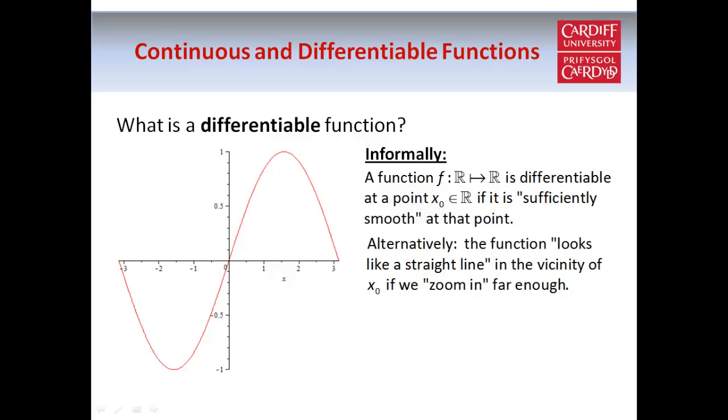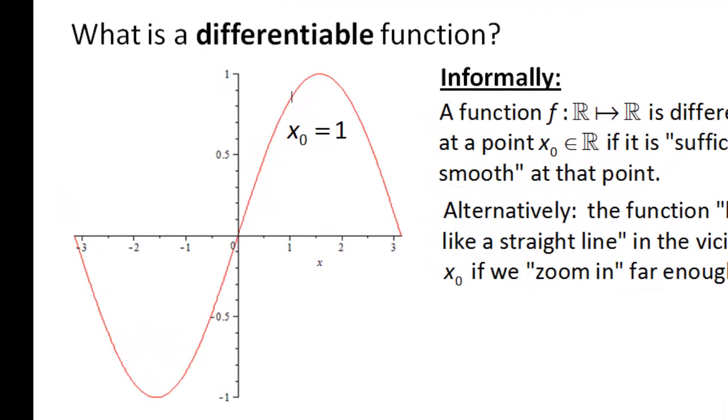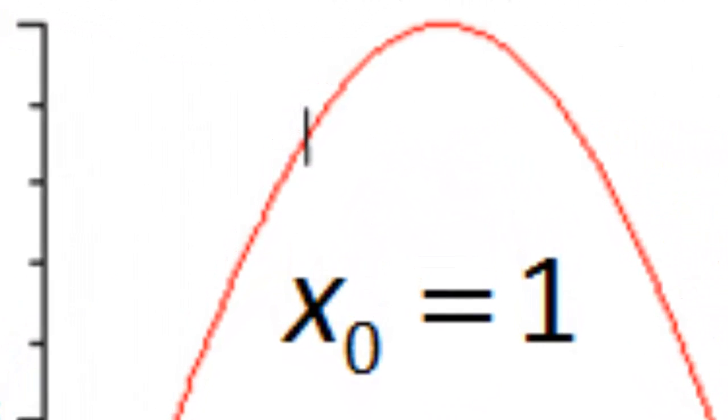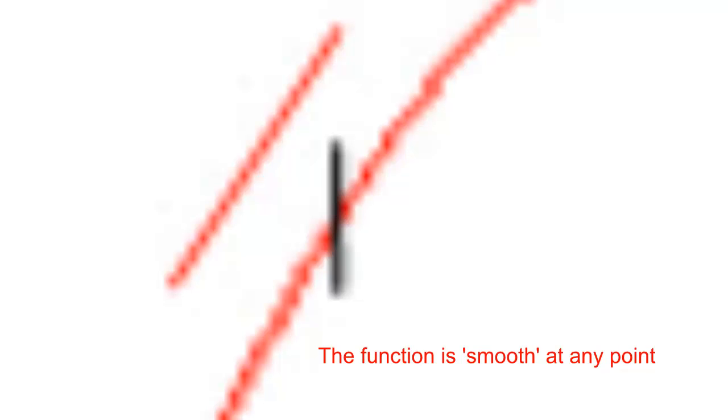Another way to say it is that if a function is differentiable at a certain point, the graph of the function looks like a straight line if you zoom in far enough on that point. For example, if we choose a particular point on the graph of sine x, like x0 equals 1, and zoom in on that point, the further we zoom in the more it looks like a straight line. This is because when we differentiate a function at a particular point, we're finding the slope of the tangent line at that point — the straight line that the function looks like there. If the graph had any sharp points, it would not look like a straight line when zoomed in, so it needs to be smooth in order to be differentiable.